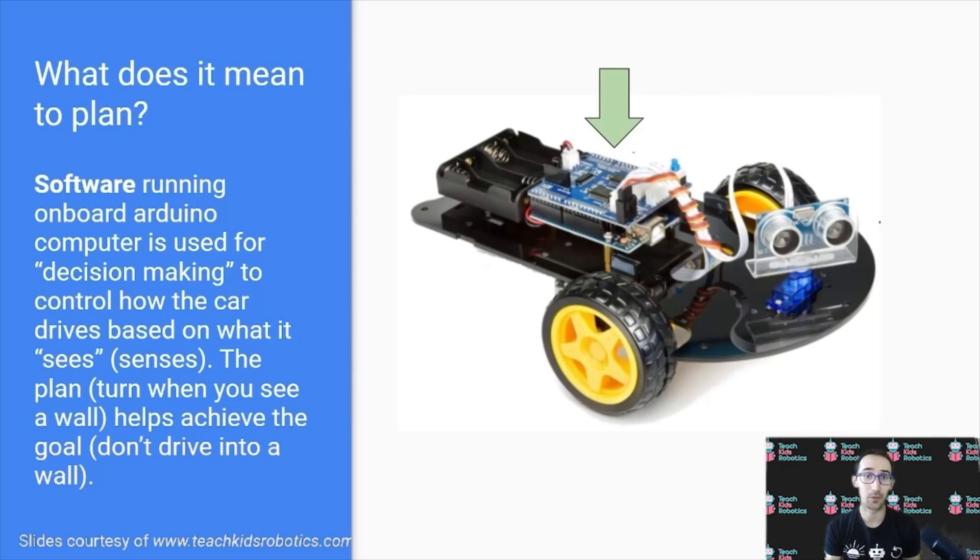Software running on an onboard computer, such as an Arduino, is used for decision making to control how the car drives based on what it sees or senses. The plan, such as turn when you see a wall, helps achieve the goal, don't drive into a wall, and is executed by the onboard computer.